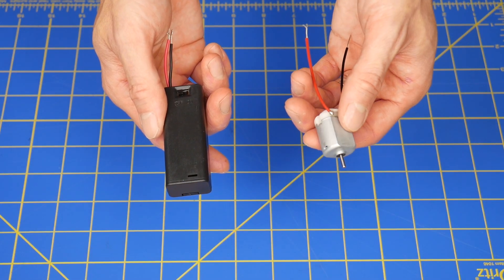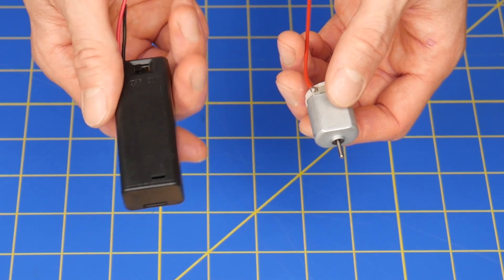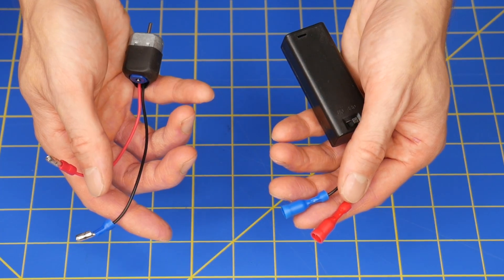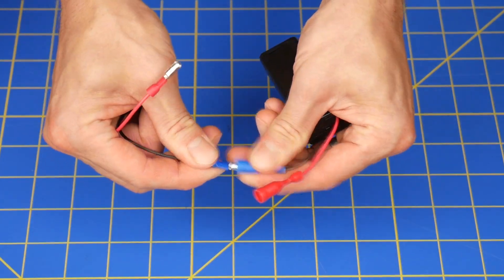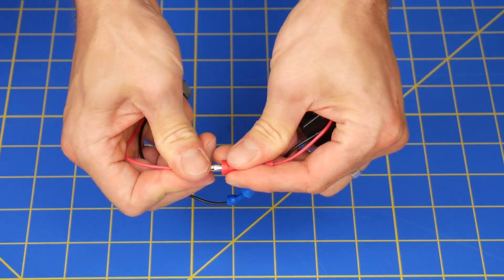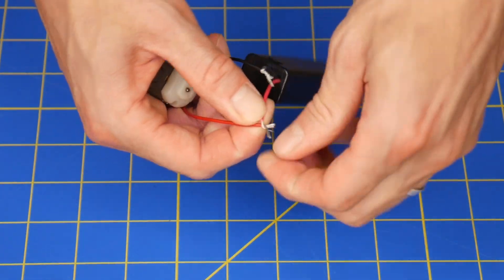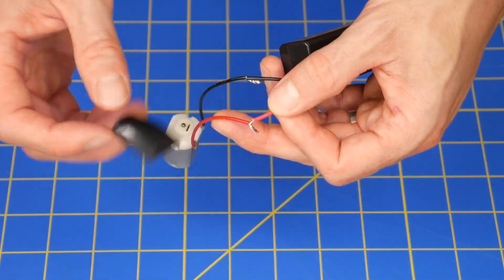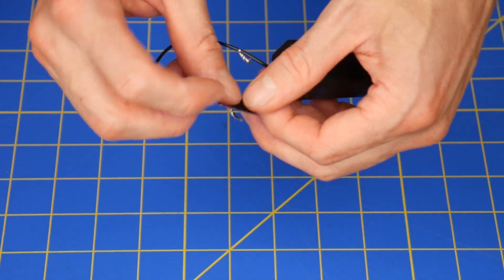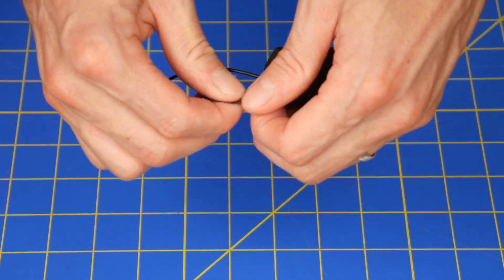So first you'll need a small electric motor and a single AA battery holder with a switch. I created a kit of supplies that have these plug and socket style connectors so that kids can do this part pretty easily but you can also just strip and twist the wires together. If you do this just make sure to cover at least one of the exposed connections with some tape to avoid a short circuit.